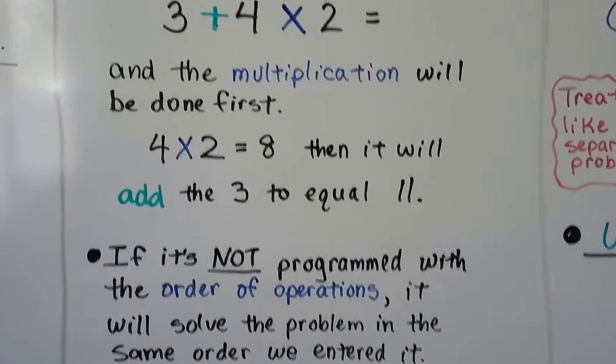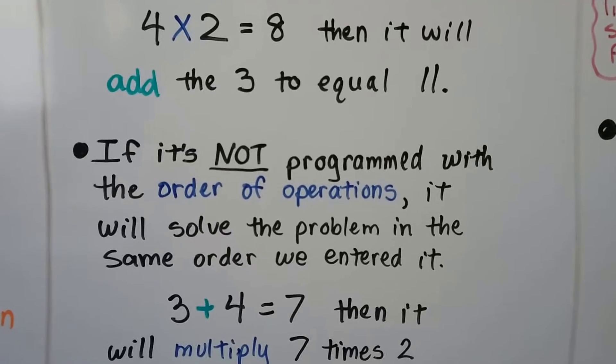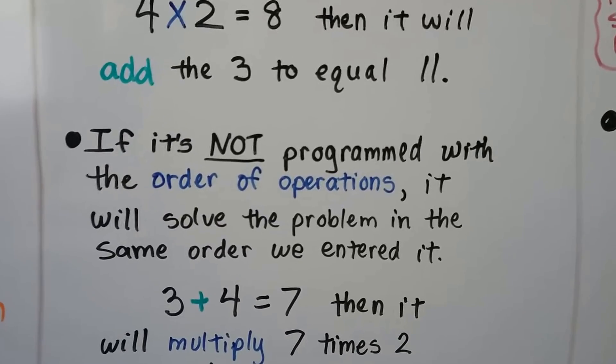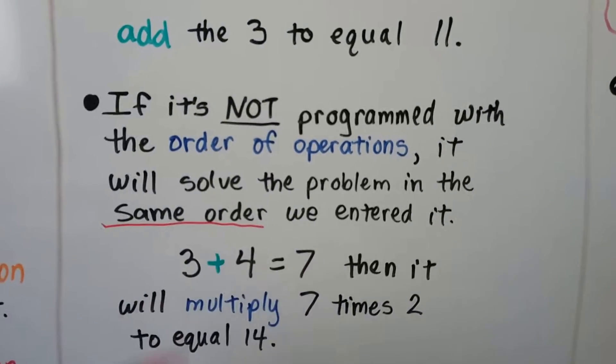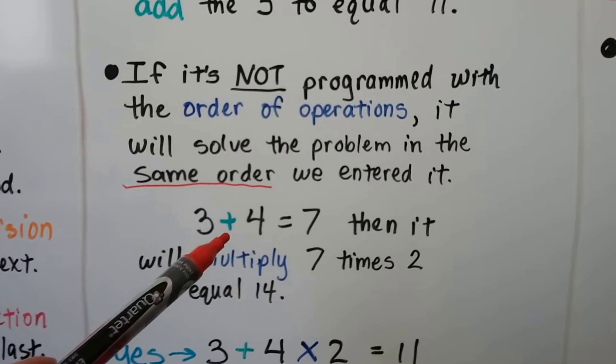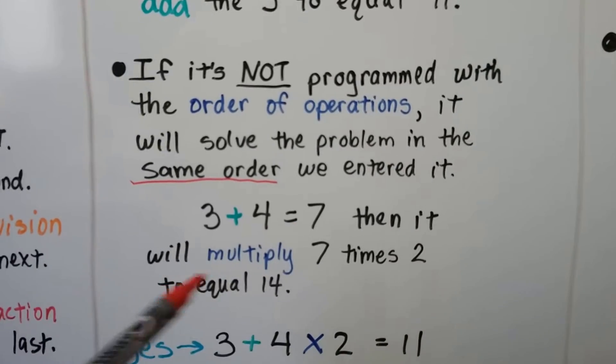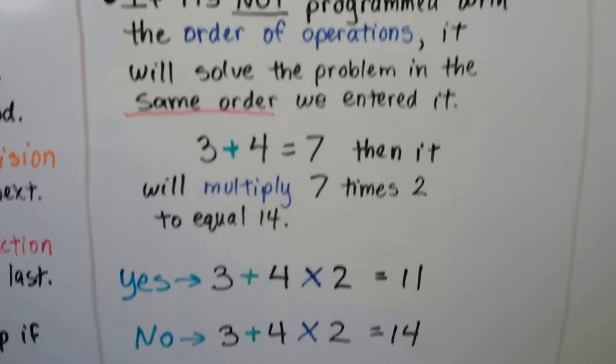But if it's not programmed with the order of operations, like it's an older calculator, it will solve the problem in the same order we entered it. It will do the 3 plus 4 equals 7 and then it will multiply that 7 times the 2 and it will be 14.